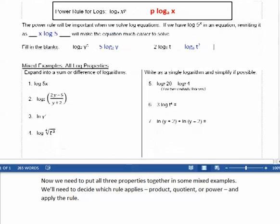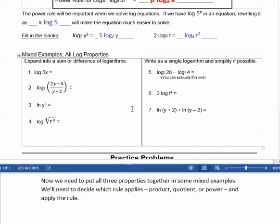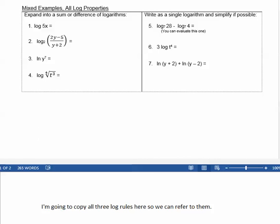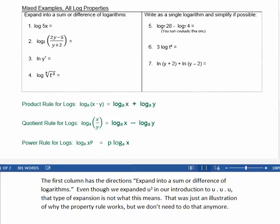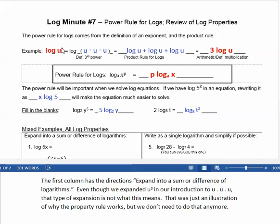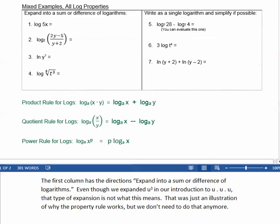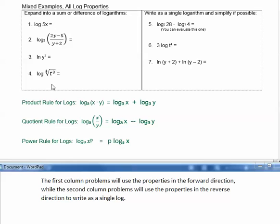Now we need to put all three properties together in some mixed examples. We'll need to decide which rule applies — the product, the quotient, or the power — and apply the rule. I'm going to copy all three log rules here so we can refer to them. The first column has the directions: expand into a sum or difference of logarithms. This means using the properties in the forward direction — expanding into a sum or difference — and also using the power rule in the forward direction.